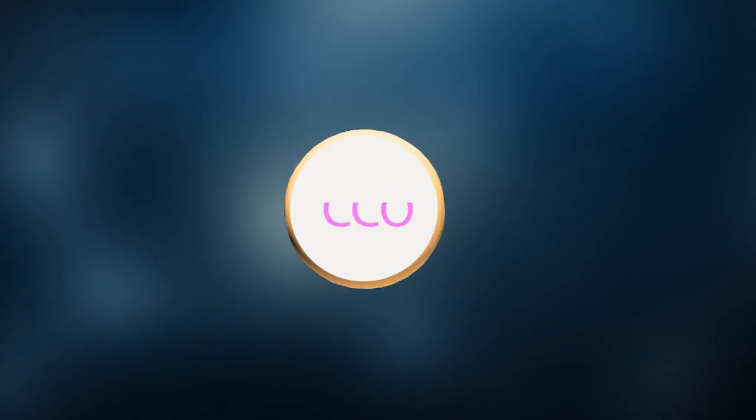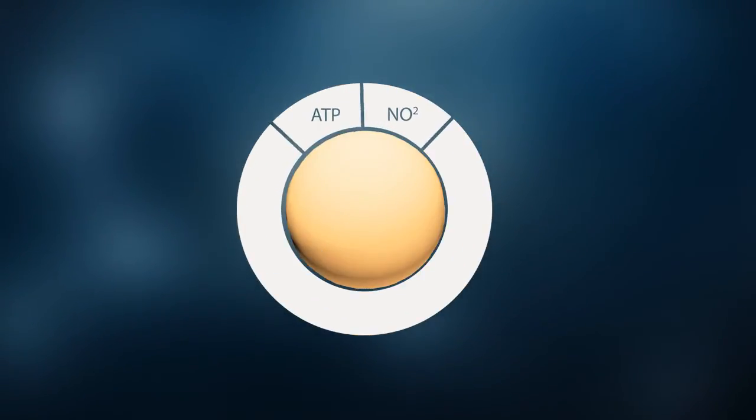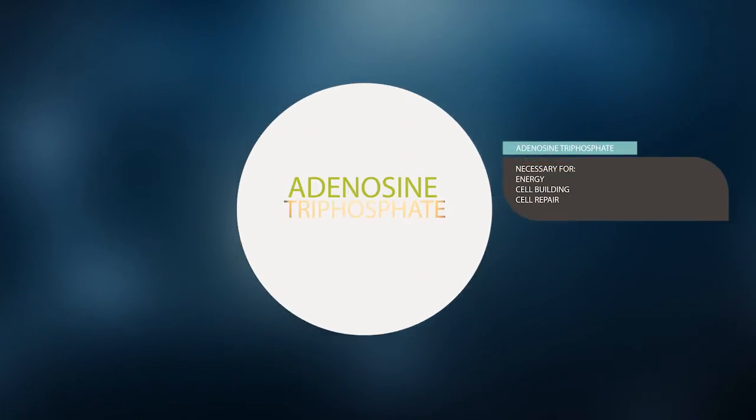So that the first element, first molecule pouring out of the CCO is ATP itself. And we know that ATP is absolutely necessary for the energy and the muscle needed for cell building and repair.